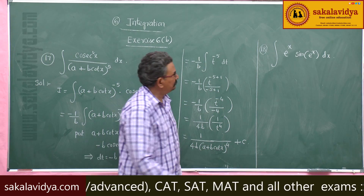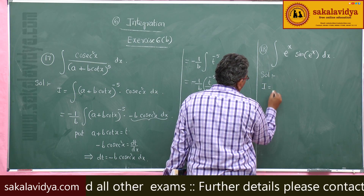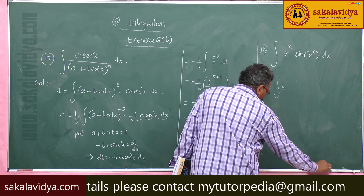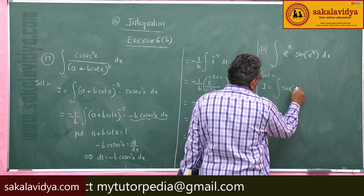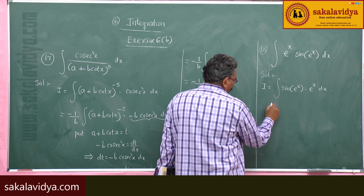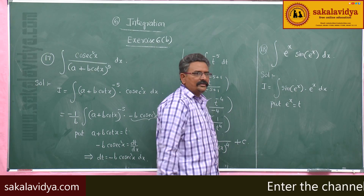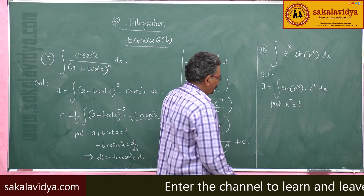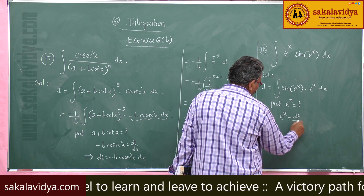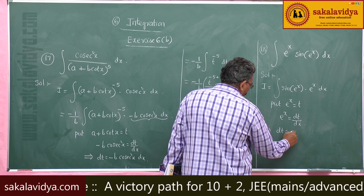Put e to the power x equal to t, and differentiate both sides with respect to x. The derivative of e to the power x is e to the power x, which equals dt/dx. So dt becomes e to the power x dx.